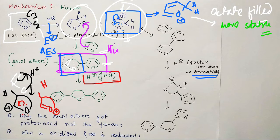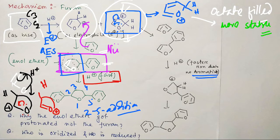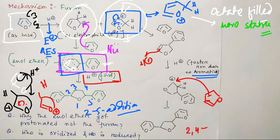In this way, through the C2-attack pathway we obtain the 1,2,3,4,5 two-five addition product. For the other canonical form, protonation at a different site gives a resonance-stabilized cation, and then another molecule of furan attacks, ultimately ending up as the 2,4-addition type product.